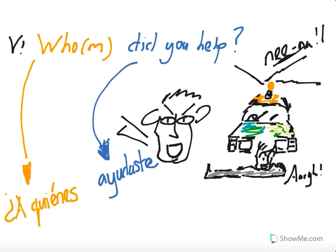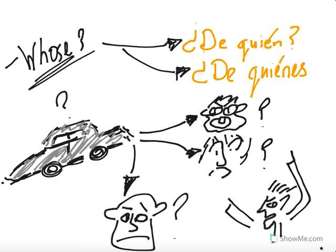All right. Number five. Who or whom did you help? A quienes ayudaste. Ayudaste. And we've got here one of those ambulance cars type of thing with someone leaning over someone going argh. Nina, Nina. Fantastic. All right.